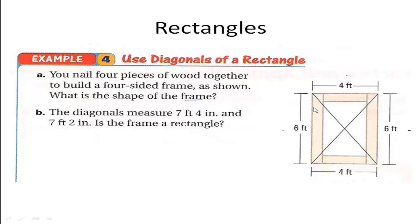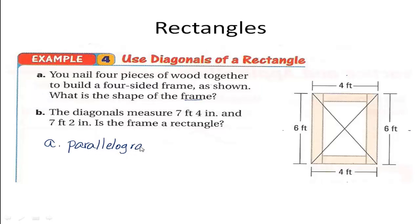Therefore, I cannot say this is a rectangle, because to say that I would need evidence of four right angles. I can't say it's a rhombus either, because the definition of a rhombus is all sides congruent, and here they are not. So all I can say for letter A is that this is a parallelogram. What kind of parallelogram? Not enough information to state that.